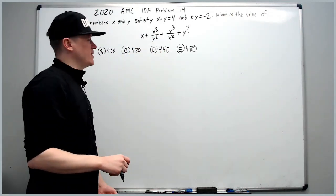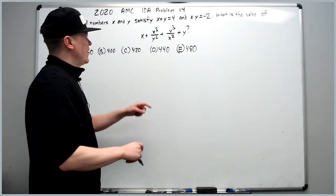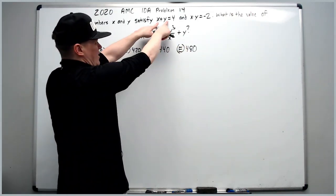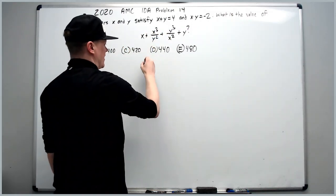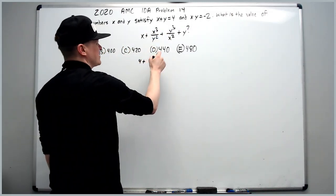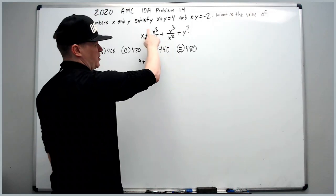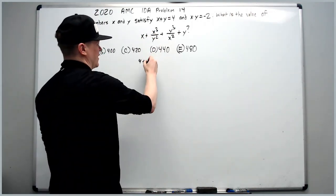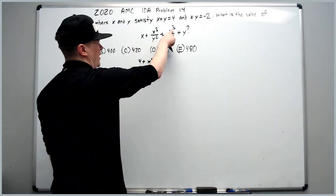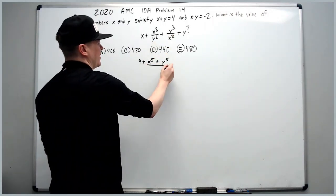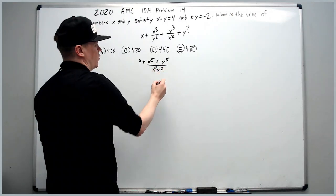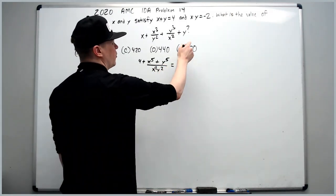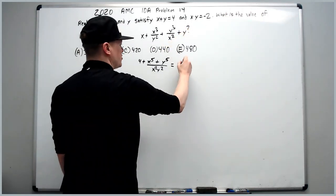First, take x and y and combine them since x plus y is 4. Group the remaining terms: x squared times x cubed is x to the fifth, y squared times y cubed is y to the fifth, and the bottom is x squared times y squared. We know x squared y squared equals 4, since we're squaring negative 2. So we have 4 plus (x to the fifth plus y to the fifth) over 4.